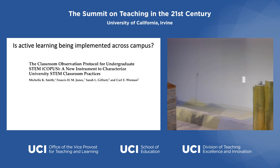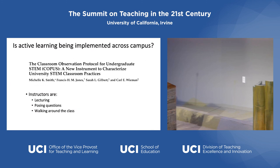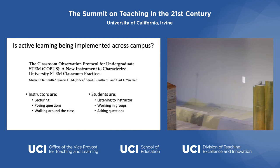The COPUS protocol — Classroom Observation Protocol for Undergraduate STEM — was originally created for STEM courses but is fairly generalizable. Trained student observers go into classes and use this protocol to record what instructors and students are doing at any given time: are they lecturing, posing questions, walking around; are students listening, working in groups, asking questions. Every two minutes, the observer jots this down throughout the entire class, giving a rich picture of not just whether something happened, but how often and when.